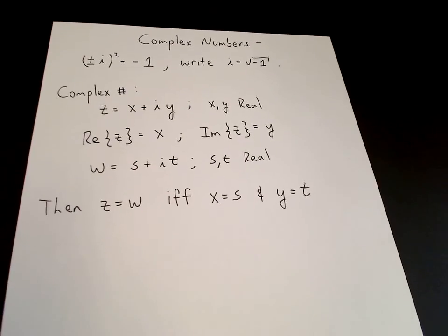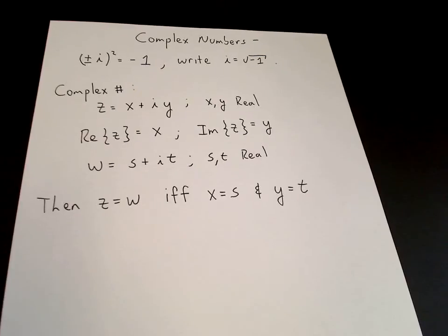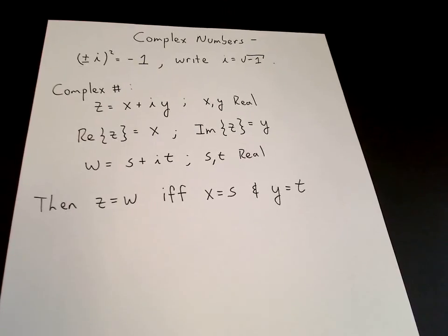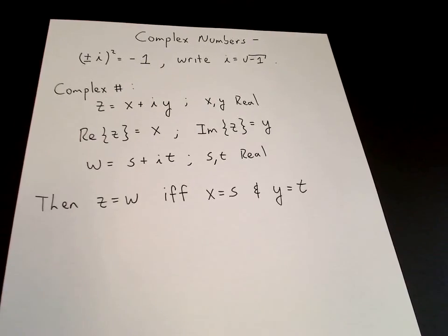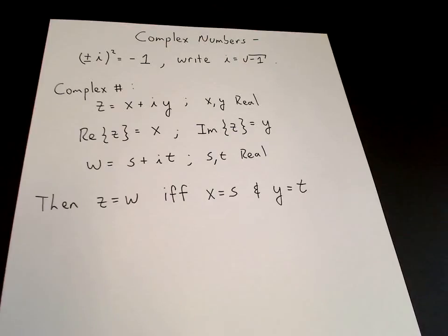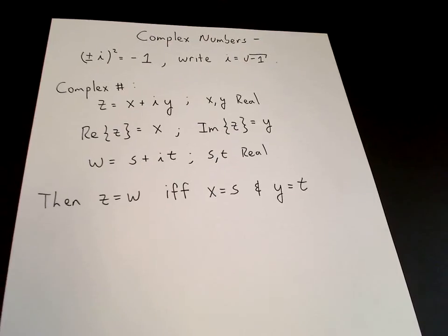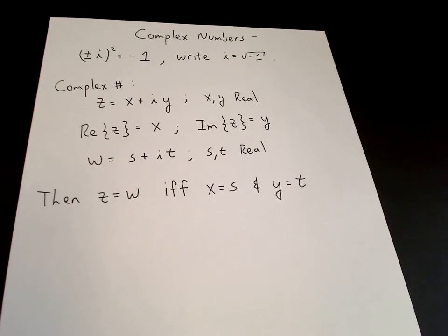A nice property of complex numbers is that if you add two complex numbers you get a complex number, if you multiply two complex numbers you get a complex number, and if you divide two complex numbers you get a complex number. Division is the hardest one to see, so let's work it out.